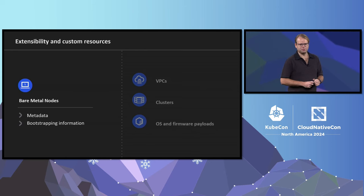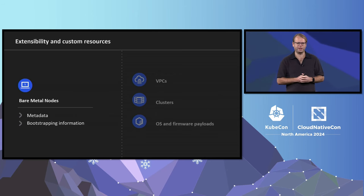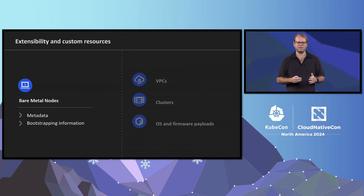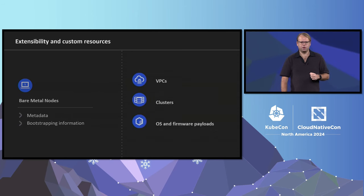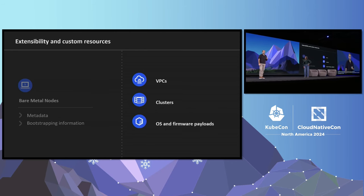To give a couple of examples, I'll start talking about our bare metal node CRD. This is an abstraction of the regular Kubernetes node resource. The bare metal node CRD allows us to create the definition of a node — a physical server — before it's even been racked and stacked. This CRD contains metadata such as its location, SKU, and serial numbers. We have also built CRDs for other components like a traditional cloud provider would offer: CRDs for VPCs, how to create Kubernetes clusters, and to manage operating system and firmware images.